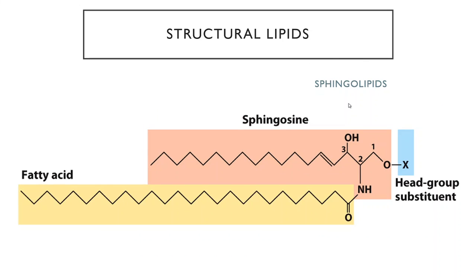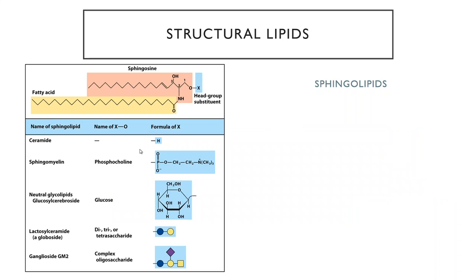Sphingolipids have similar properties to the phospholipids, except one of the fatty acid chains is a sphingosine group — a long carbon chain with an amino alcohol group at the end, and that's what links it to the fatty acid and to its head group. You can put lots of different things at that head group. If there's nothing but a hydrogen there, then this molecule is called a ceramide, which is the basis of a sphingolipid.